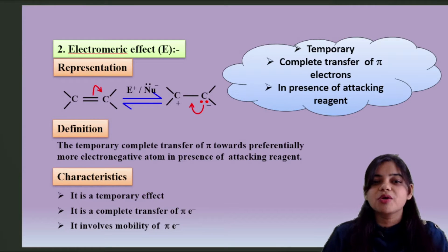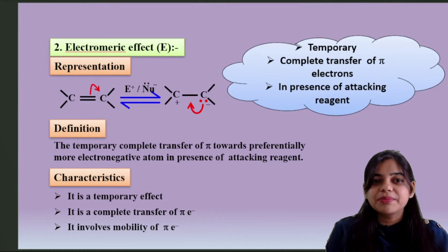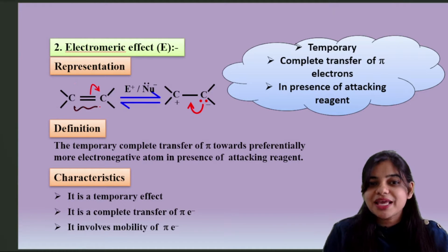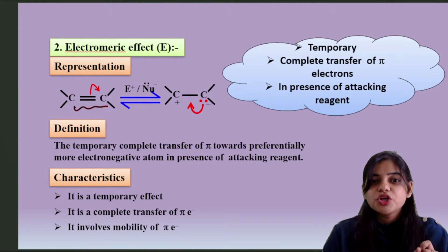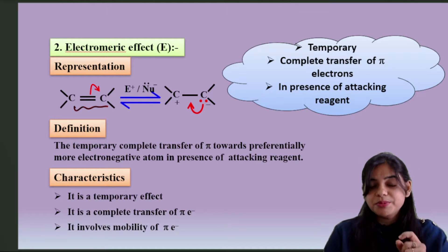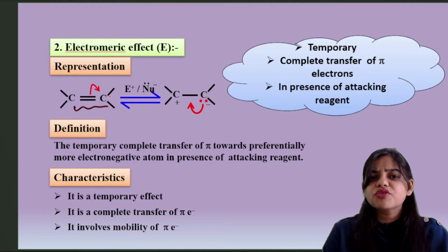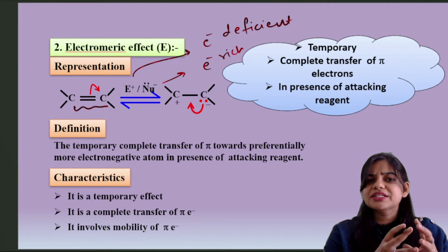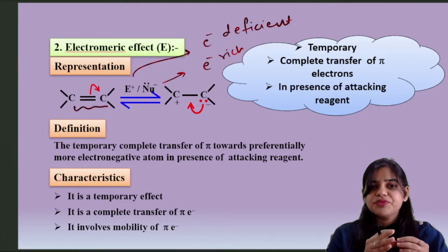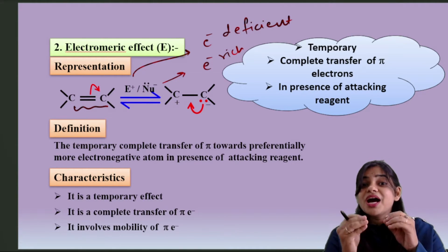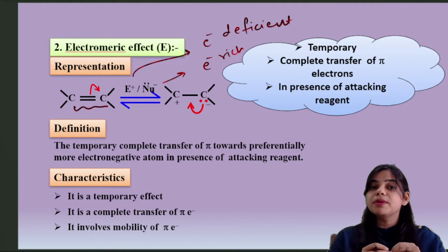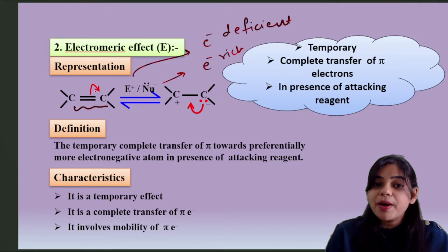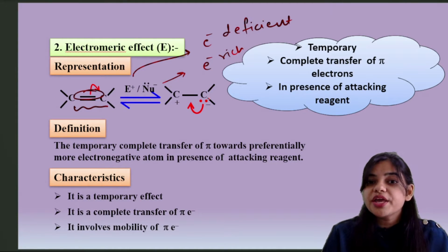For example, we have carbon double bond carbon. One is sigma bond in double bond and one bond is pi bond. So when someone attacks, maybe some electrophile or nucleophile - electrophile means electron deficient species, or nucleophile means electron rich species. If it is attacking our alkyne, okay, alkyne has a single bond or a double bond. If it attacks, what happens?